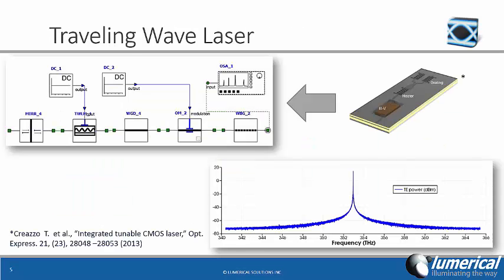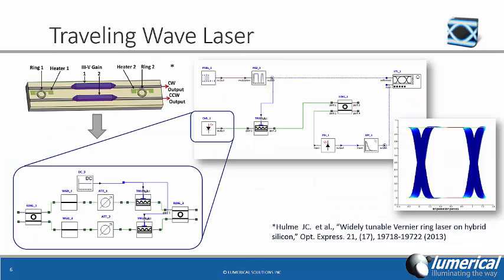Next, a new 1D traveling wave model in Interconnect incorporates the effects of external feedback and resonances from the rest of the circuit, allowing it to be used in the design of hybrid laser chips as well as integrated lasers driving photonic integrated circuits.